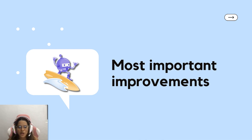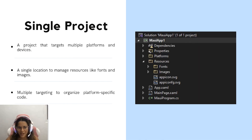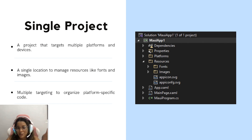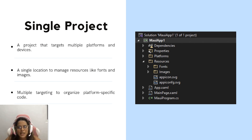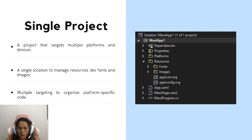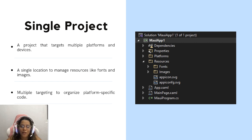Now I want to continue to the most important improvements from Xamarin to .NET MAUI. The first, and one of the most important for me, is the single project. You probably know that when creating a project in Xamarin, you have a core project and a project per each platform — a solution with a project for Android, another for iOS, and so on. In .NET MAUI, all of this is wrapped up in just one project, called the single project. It's a project that targets multiple platform devices, with a single location to manage resources like fonts and images, and multiple targeting to organize platform-specific code.